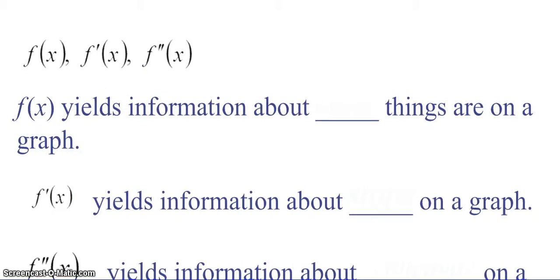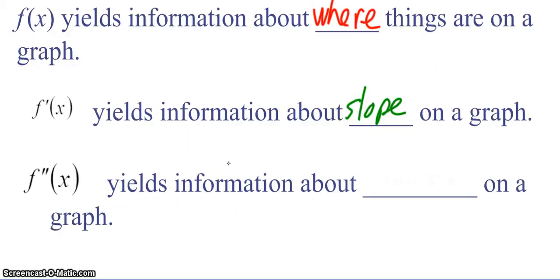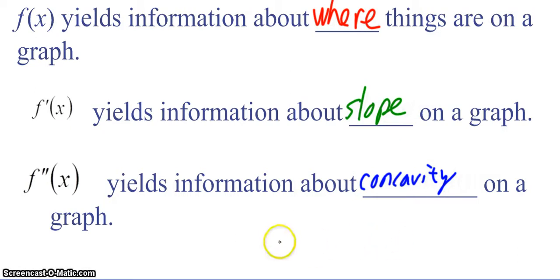What information does f(x) yield about the graph? f(x) tells us where things are — at a given x value, it gives us the y value, so it's a location. What does f′(x) yield? f′(x) tells us the slope, or the instantaneous rate of change, which tells us if the function is increasing or decreasing. And what does f″(x) tell us? f″(x) tells us whether the function is concave up or concave down.